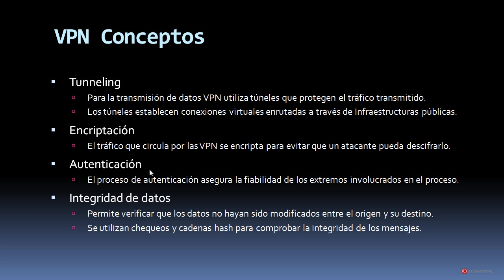The traffic that circulates through VPNs is encrypted to prevent an attacker from being able to decipher it, capture it and decipher the content of the data. We will study later which technologies and protocols are used. We also have authentication. The authentication process ensures the reliability of the endpoints involved in the process. And also the concept of data integrity, which allows verifying that the data has not been modified between the origin and its destination. For this task, hash checks and chains are used to verify the integrity of the messages.